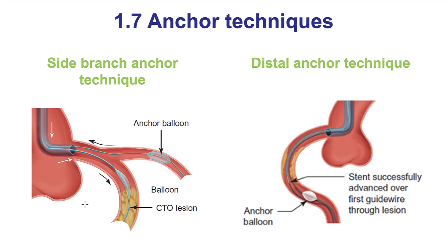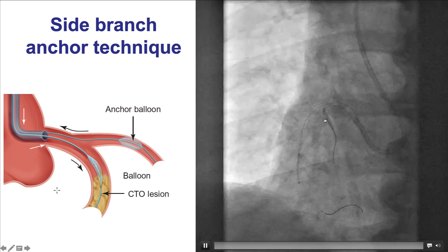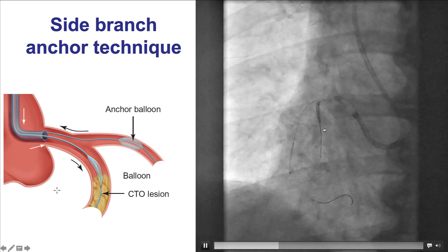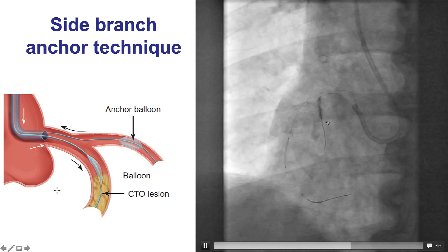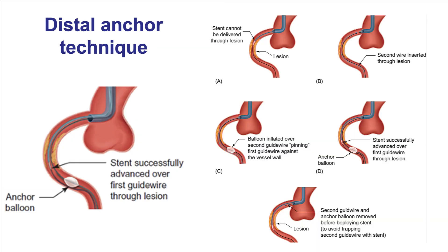The seventh way to improve guide catheter support is using anchoring techniques, of which there are two. In the side branch anchor technique, a workhorse wire is advanced into a side branch, and then a balloon sized one-to-one to the side branch is advanced into the branch and inflated at six to eight atmospheres, providing strong support for the guide catheter to allow advancement of other equipment over another guide wire. In the distal anchoring technique, two guide wires are inserted into the target vessel, and a balloon is inflated over one wire, which pins the other wire and facilitates advancement of equipment over the second wire.